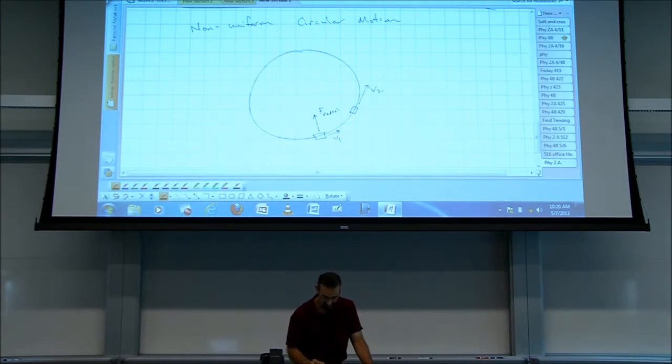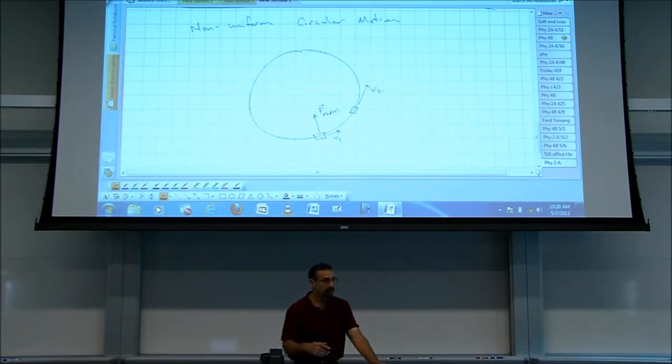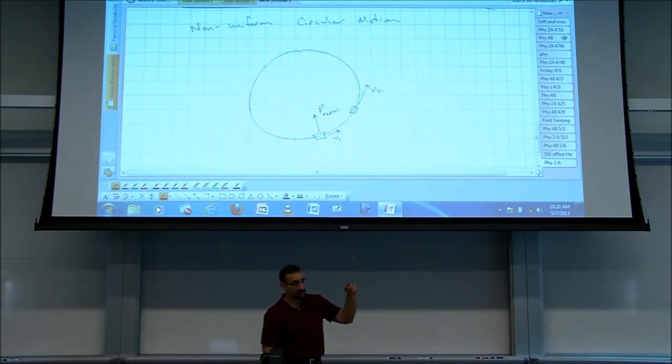That's responsible for the radial acceleration, which can't change the speed because it's perpendicular to the direction. It can't change the speed, but it can change the direction. Now, its speed also changed. So the velocity has two components. The direction changed because of this radial force. So what could have caused the speed to change?